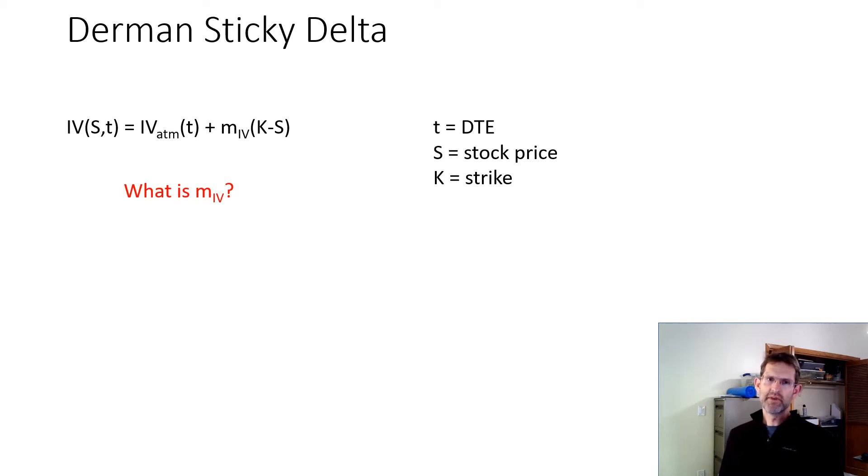So here's the basic Derman Sticky Delta equation. He assumes that IV is a linear equation and that it depends on stock price S and time T.